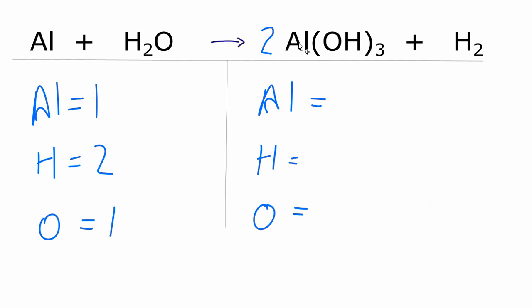So now we have one times two for the aluminum atoms, and then for the hydrogen, we have three times the one, so we have three of those, but this two, this coefficient applies to everything. So it's really two times this three, so we have six hydrogens here, plus the two here, for a total of eight.